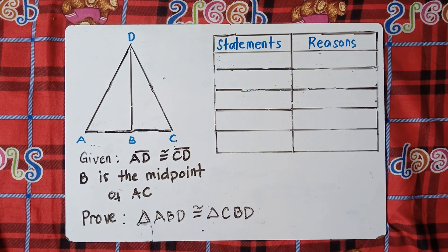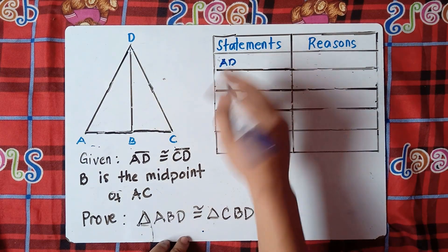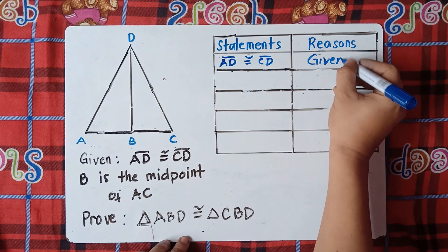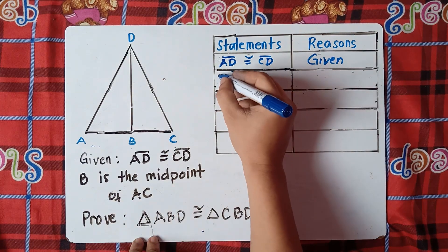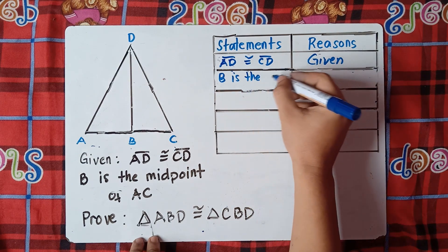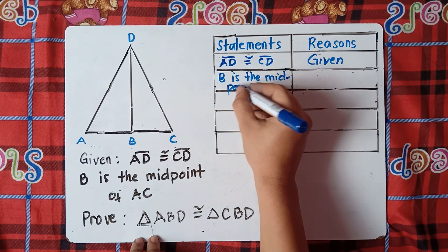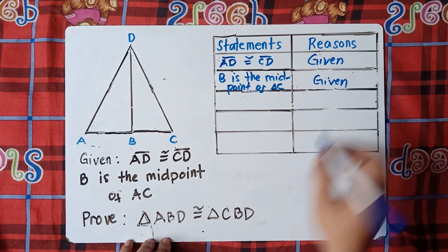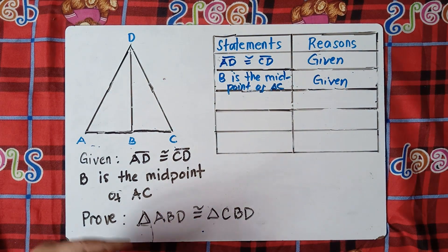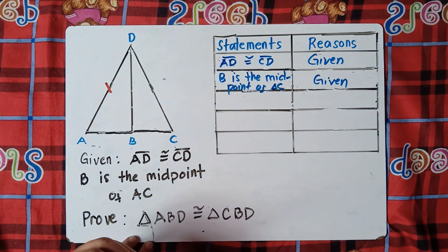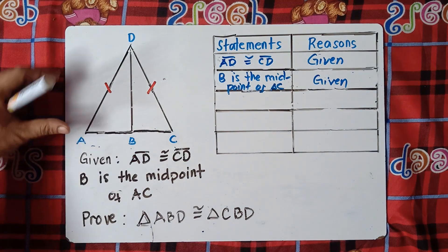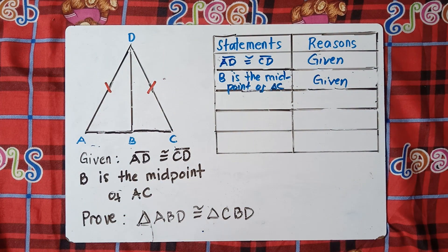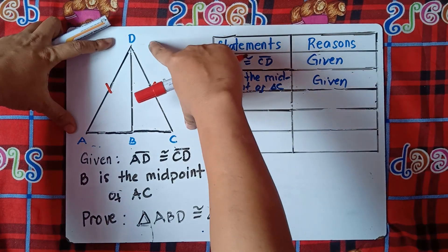When answering this two-column proof, always write the given. So: line AD is congruent to line CD — reason: given. And B is the midpoint of AC — reason: given. AD is congruent to CD, so this side is congruent to this side CD. We already have one pair of congruent sides.